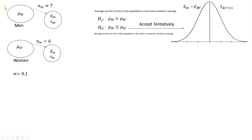If you take a sample of seven people from the population of men and a sample of six from the population of women, the total number of men and women in the sample is 13. But we know the mean of the women in the sample and the mean of the men in the sample. Therefore, we lose two degrees of freedom and have to use a T distribution with a degree of freedom of 11.